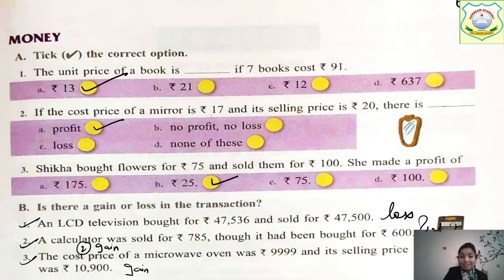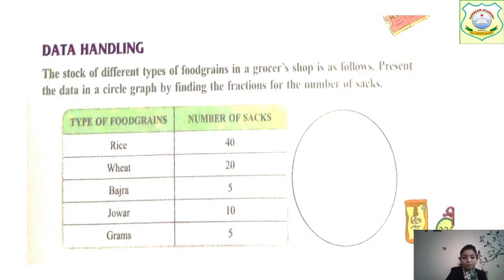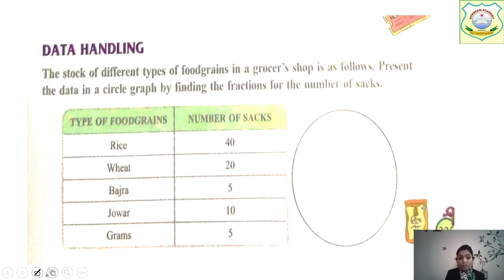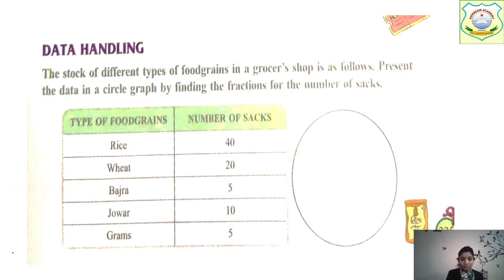Now moving to Data Handling. The question asks about the stock of different types of food grains in a grocer's shop — present the data in a circle graph by finding the fraction for the number of sacks. We will find the fractions and then show them in a circular graph.